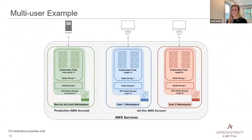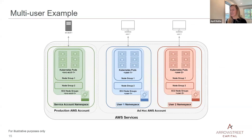This shows the view across accounts and users. On the left, the production account has a service account connecting from a production service and creating its namespace for a specific job. On the right, the ad hoc account allows different users to come in and request one or more namespaces with their own node groups and EC2 instance types that live for the life of their request.